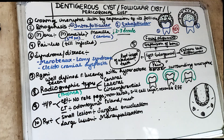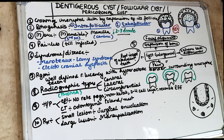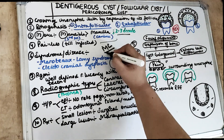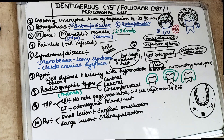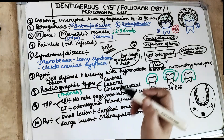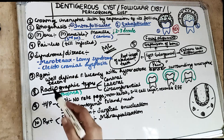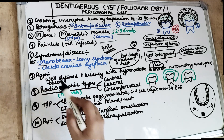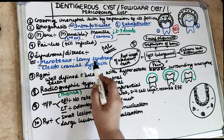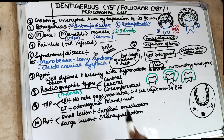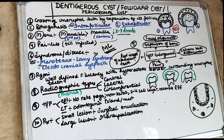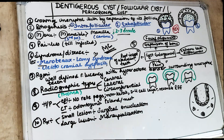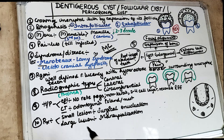All the syndromes associated with the Dentigerous cyst can be remembered as MC. M is Maroteaux-Lamy syndrome — this is basically a heart disease seen in children; children with Maroteaux-Lamy syndrome have heart disease associated at a young age. C is Cleidocranial dysplasia, which we will cover in a different video.